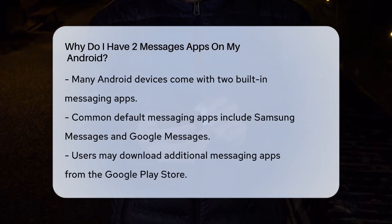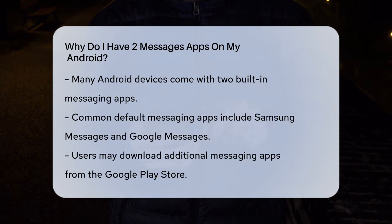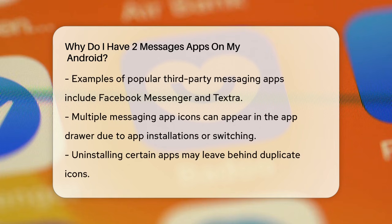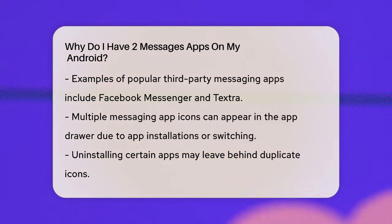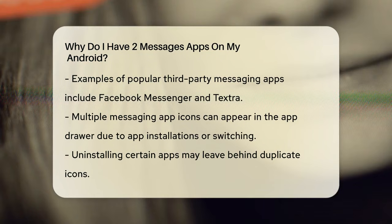First, let's talk about the default messaging apps that come with your Android phone. Most Android devices, like those from Samsung or Google, come with at least two built-in messaging options. For example, Samsung phones often have Samsung Messages and Google Messages pre-installed. When you receive a new phone, one of these apps is usually set as the default messaging app.